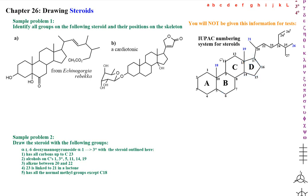Steroids almost always have a methyl at carbon-18, a methyl at carbon-19, and a methyl at carbon-21. You have to learn where to start your numbering and the pattern.